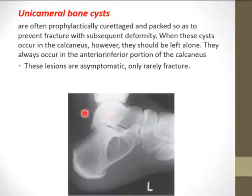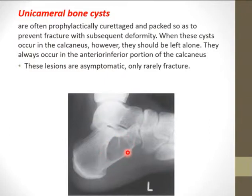Unicameral bone cyst — if in weight-bearing parts of bones like the humerus or femur, they are prophylactically curetted and packed to prevent fracture. However, when they occur in the calcaneus, they should be left alone, because they usually occur in the anterior inferior portion of the calcaneus, which is not a weight-bearing part of the bone, and they very rarely fracture in this location.